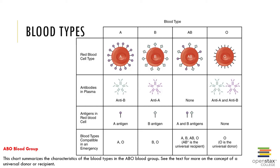The RH system is named from its first discovery in the rhesus monkey. Individuals whose red blood cells possess the D antigen are considered RH positive. Those without the D antigen are considered RH negative.